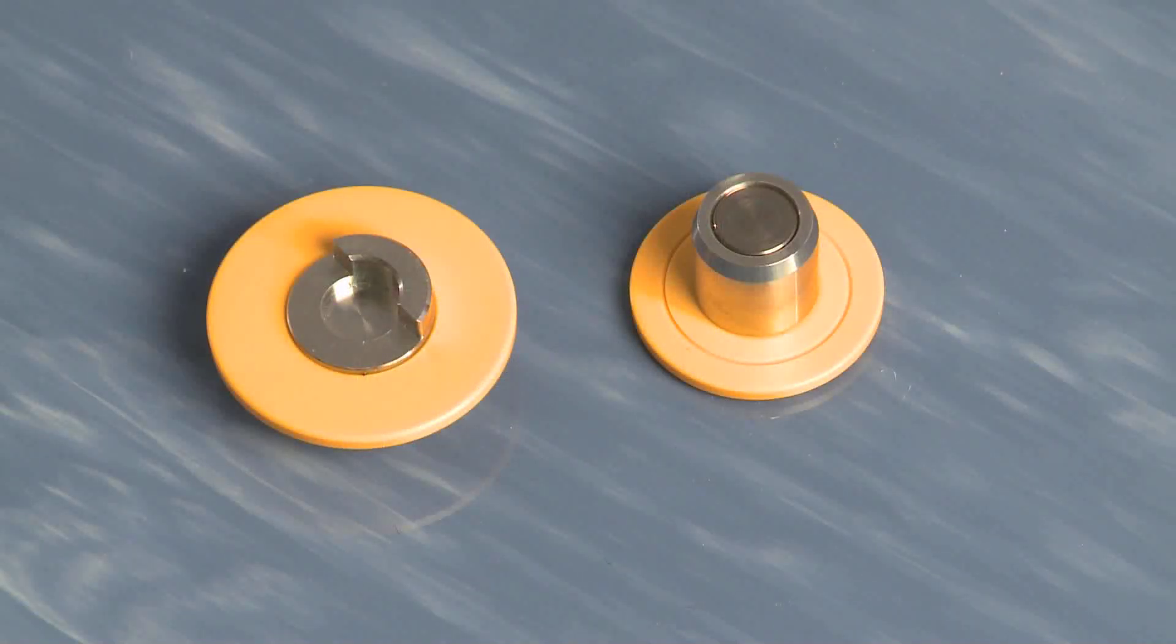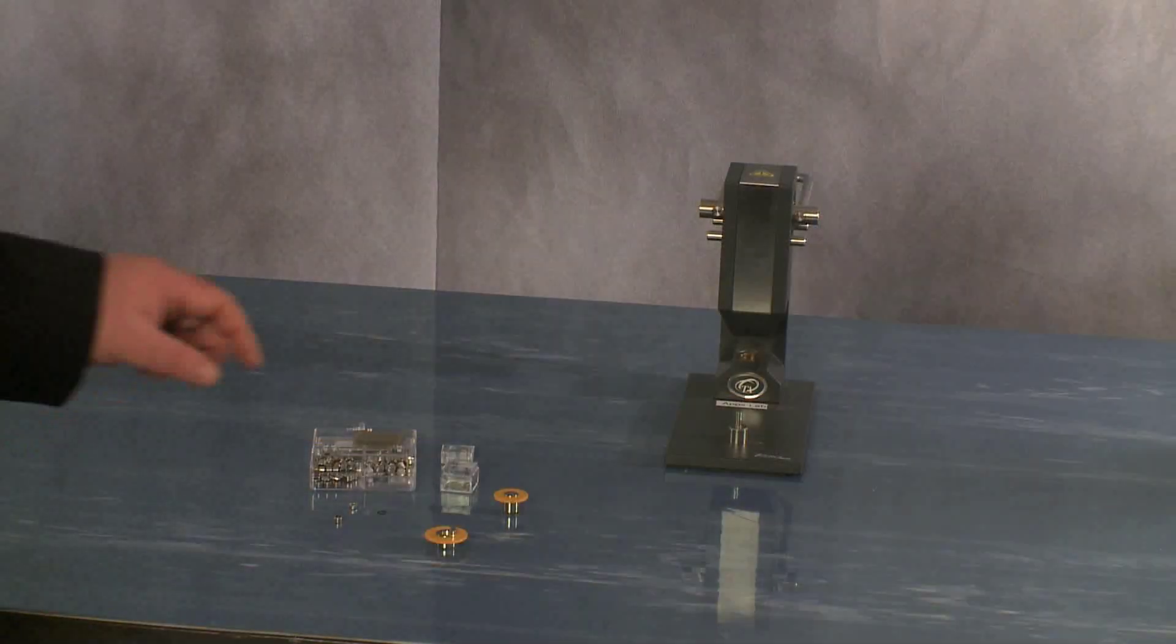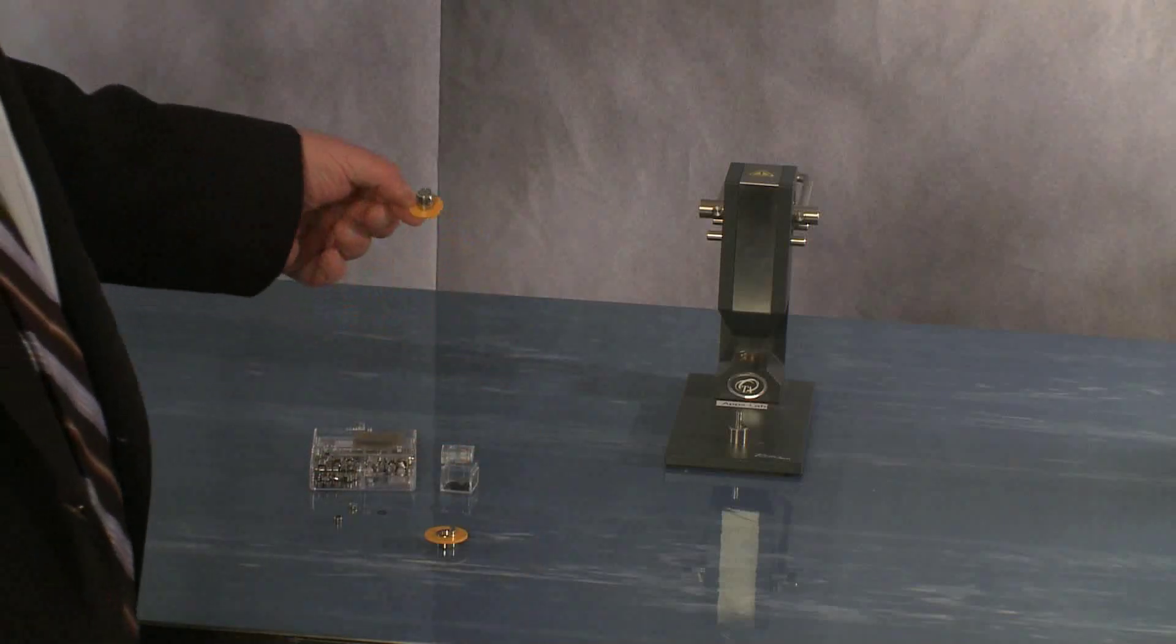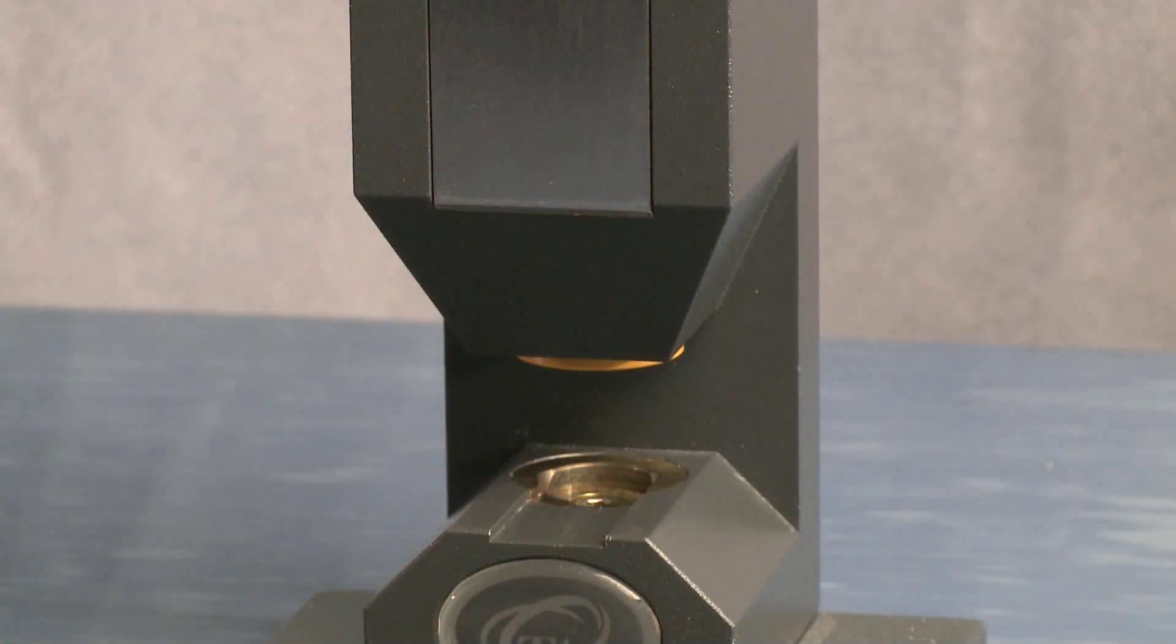The die set that we use is the T0 die set and it's a yellow die set and it goes in the T0 press. The sealing die just simply fits underneath and is held in with a magnet.